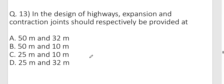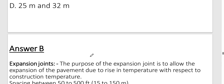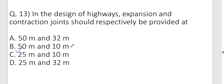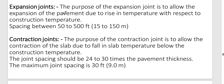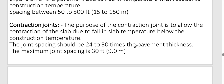Question thirteen: In highway design, expansion and contraction joints should be provided at — option B — expansion joints at 50 m and contraction joints at 10 m. Expansion joints allow pavement to expand due to temperature rise. When temperature increases, the concrete expands, and expansion joints prevent stress buildup. Contraction joints handle the contraction effect — a gap remains to accommodate contraction when temperature drops during construction.